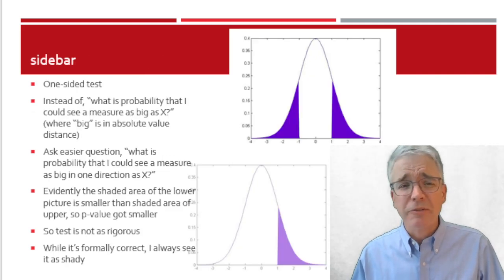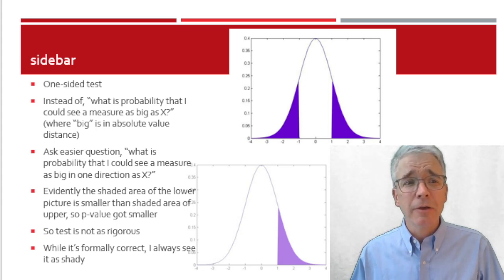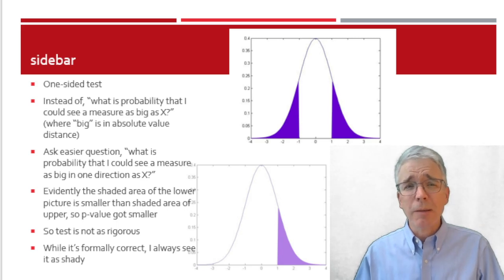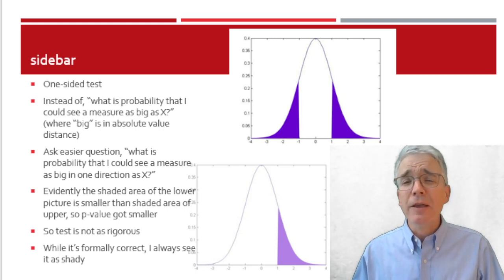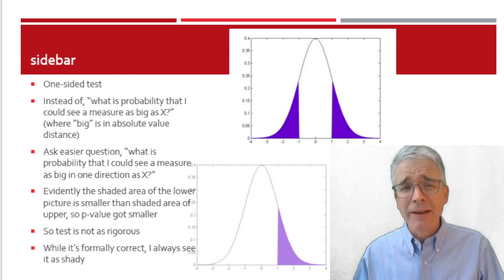Another thing that you commonly see in principles is you're shown how to construct a one-sided test. Instead of saying, what is the probability I could see a measure as big as x, where big is an absolute value, we ask the easier question, what's the probability that I could see a measure as big in one direction? Only one direction. In those little pictures, that's the light purple shading, not the dark purple shading. Now I'm not adding both tails, instead only using one of the tails. And the total shaded area is lower in the bottom picture with the light purple.